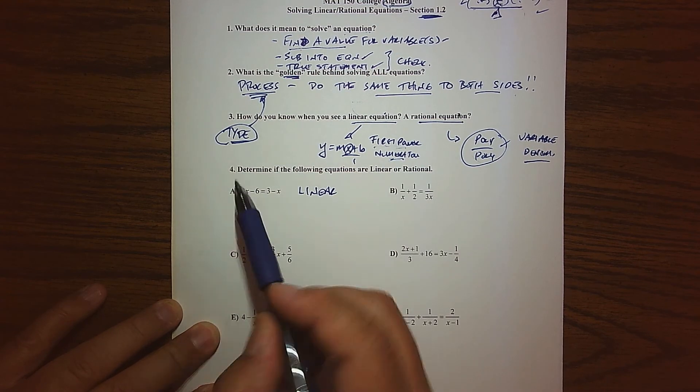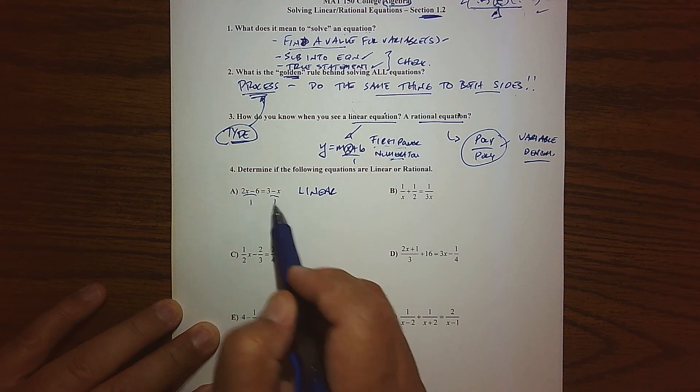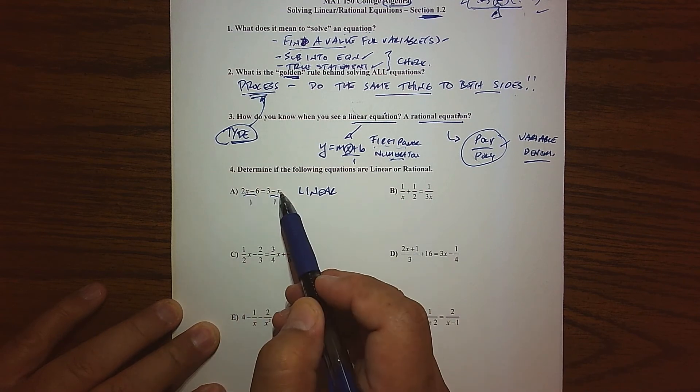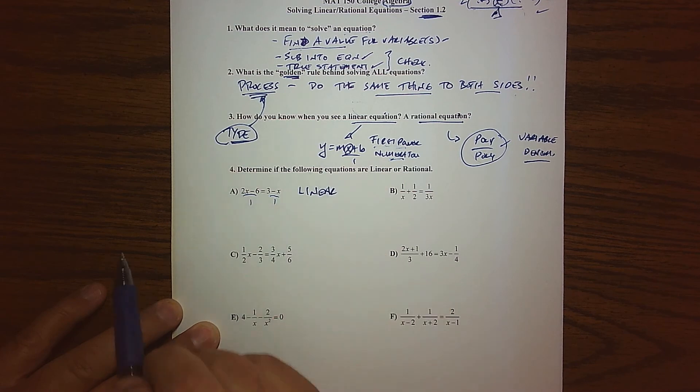Or if you take a look at your variable, it's up in the numerator, and it's to the first power. Here's x, and technically this is over one and over one. So x is up in the numerator, and it's to the first power. x is in the numerator, it's the first power. Or it basically fits the form y equals mx plus b.